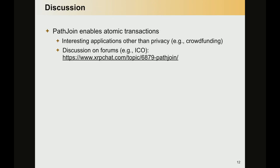In the last two minutes, I'd like to discuss a couple of points. First, we have seen that PathJoin enables atomic transactions. Even though here I have shown it in the context of privacy, it is possible to use it in other applications. In the paper, we discuss how to use it for crowdfunding. But even in the forums, people are using it for other applications — so there are many use cases that could be realized using the PathJoin protocol.